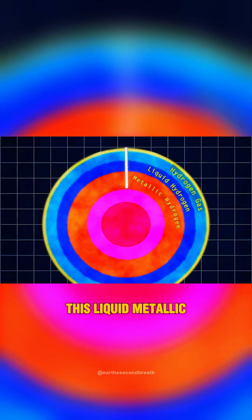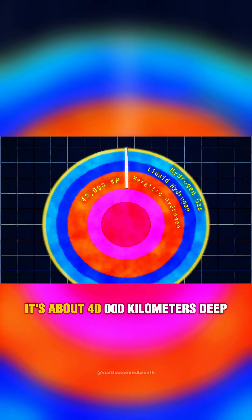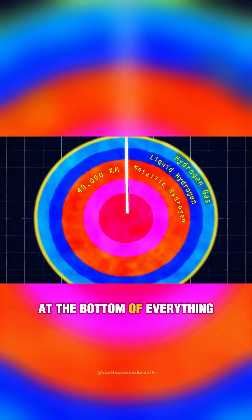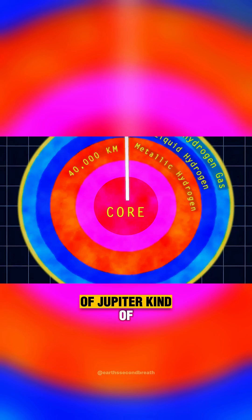This liquid metallic hydrogen makes up the majority of the planet's interior. It's about 40,000 kilometers deep and down there at the bottom of everything lies the solid core of Jupiter. Kind of.